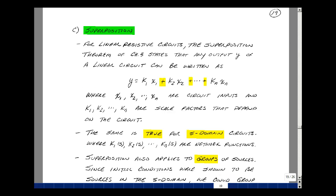For our next circuit theorem, let's take a look at superposition. In ECE201, for resistive circuits, our superposition theorem, which was in chapter 3, states that any output y of a linear circuit can be written as the following sum. That y is equal to k1 times x1 plus k2 times x2, all the way down to kn times x sub n, where x1 through x sub n are the circuit inputs.